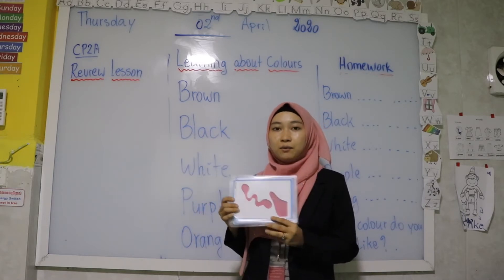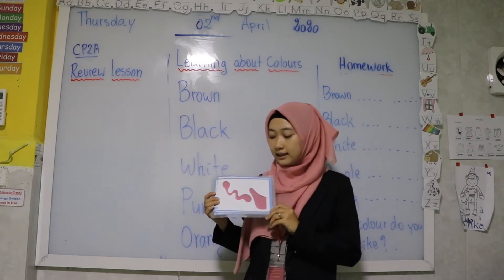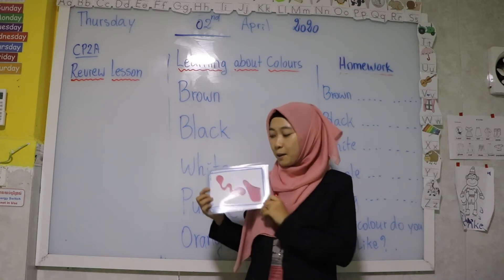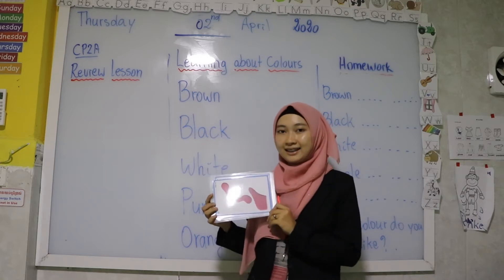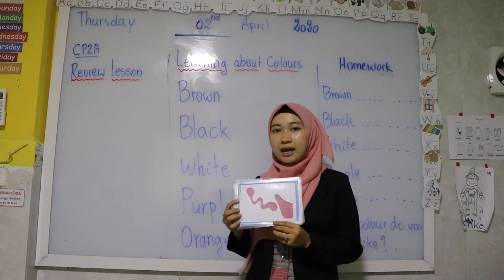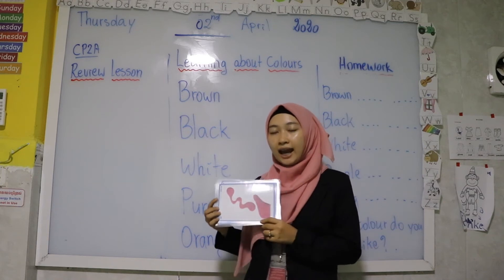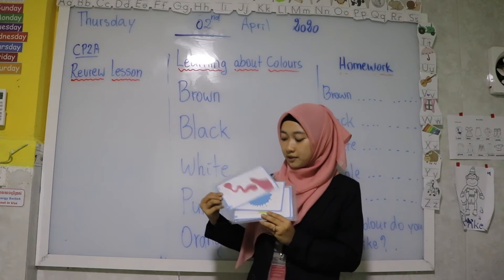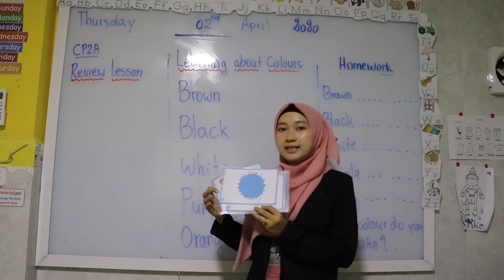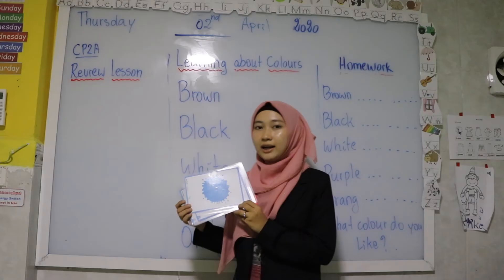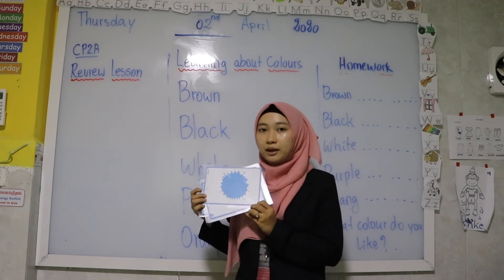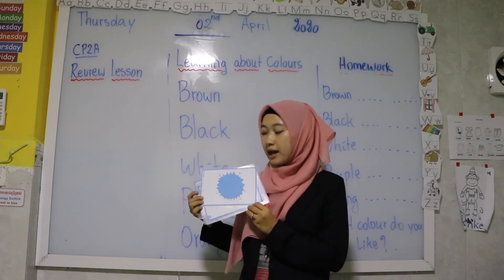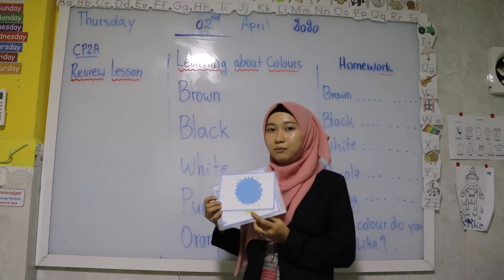Move to the next word. What is this color? This is pink. Pink is spelled P-I-N-K. Pink. Move to the next one. This is blue. Blue is spelled B-L-U-E. Blue.